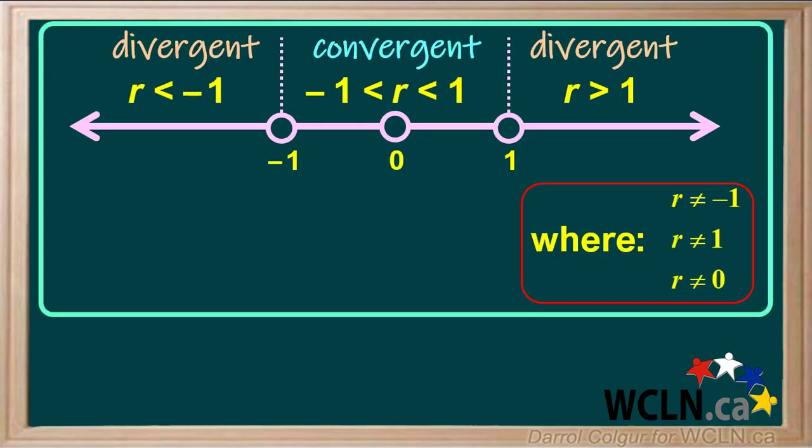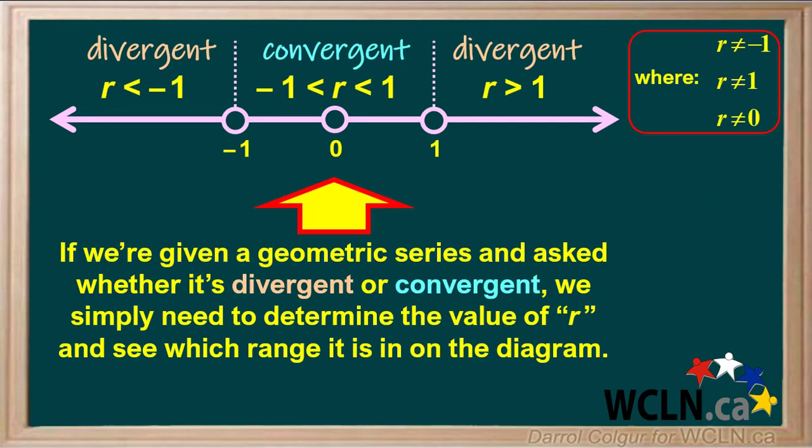We can summarize divergent and convergent geometric series in terms of their R value with this diagram. You should memorize this diagram. If we're given a geometric series and asked whether it's divergent or convergent, we simply need to determine the value of R and see which range it is in on the diagram.